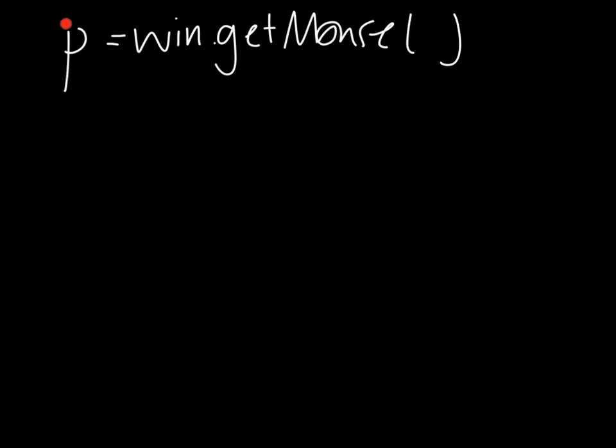So in my code I write p equals win dot getmouse using the graphics library and this passes me all the information about the point I've clicked. Now from the other screen we're going to say that horizontal line, its y value for the horizontal line is 50, from the top of the screen.